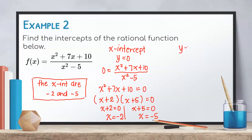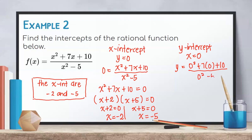To solve for the y-intercept, set x = 0. So y = (0² + 7(0) + 10) / (0² - 5) = 10 / -5 = -2. Therefore, the y-intercept is -2.